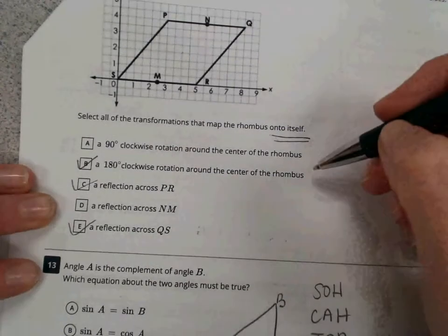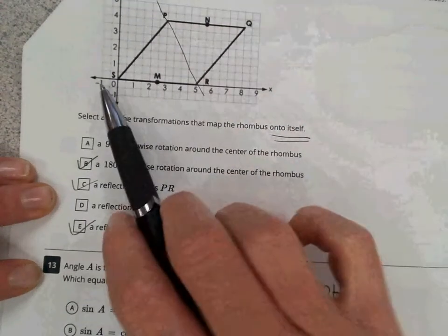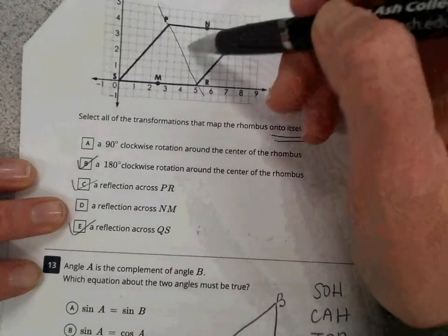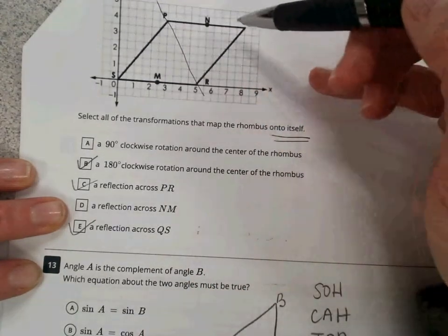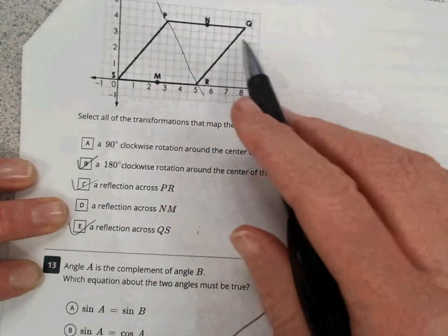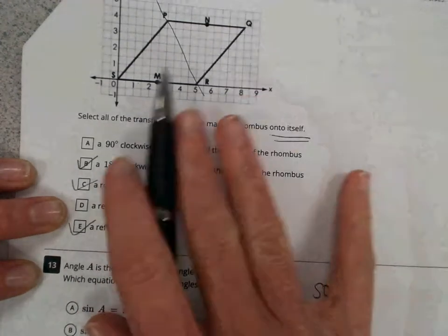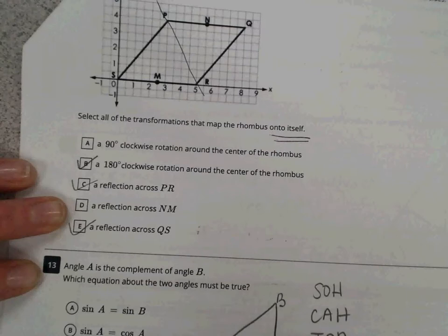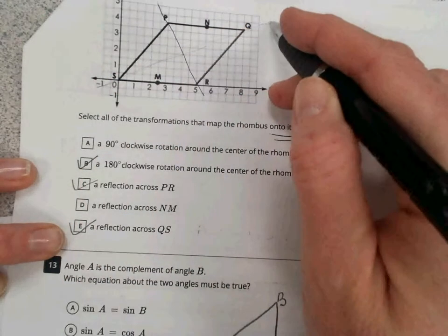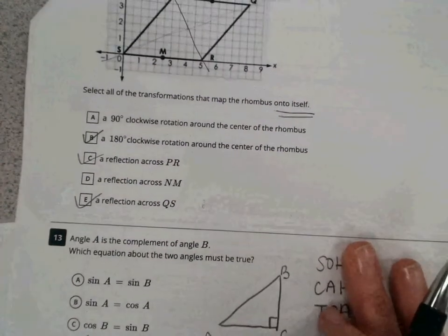Select all the transformations that map the rhombus onto itself. A 180-degree clockwise rotation. Again, if we rotated, so S landed where Q is and Q landed where S is, they would, again, since it's all sides congruent, that would qualify. A reflection across PR, that's a diagonal, so that would work. A reflection across NM, that would not work, based on mainly the fact that those angles are not all congruent to one another. Opposite angles are congruent, but not adjacent. A reflection across QS. Again, QS is a diagonal, so that would qualify.